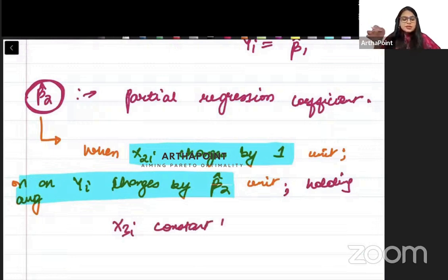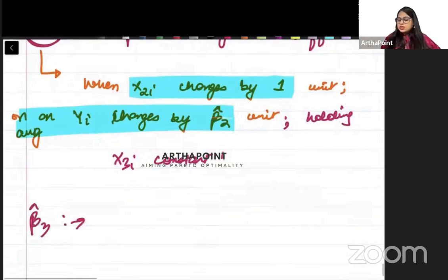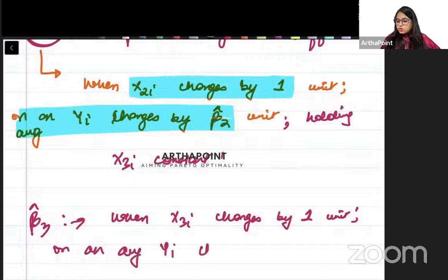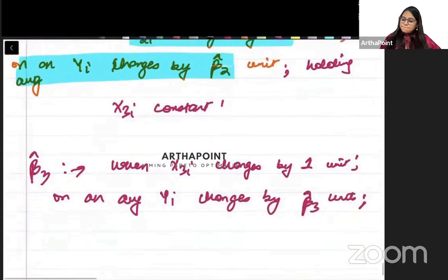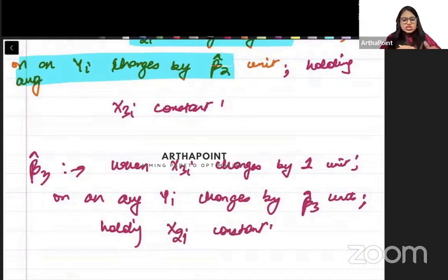Similarly, we can interpret beta 3 hat as: when x3i changes by one unit, on an average yi changes by beta 3 units, holding x2i constant. Because we are keeping the effect of x2i constant, we can go ahead and say that it is a partial slope coefficient.